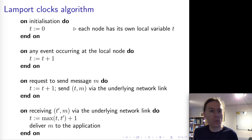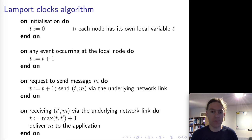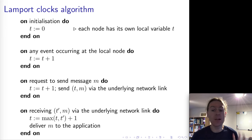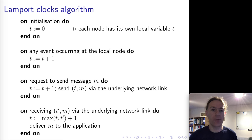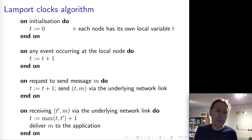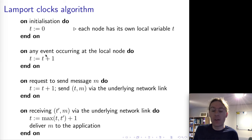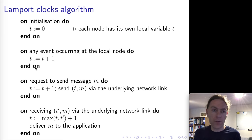Let's start with Lamport clocks. These are named after Leslie Lamport, who published this algorithm in about 1978. This has been a classic of distributed systems. The algorithm starts with every node having a variable t, initialized to zero. Each node has its own copy of t. Every time some event occurs at a node, we increment t. An event could be some local execution step, sending a message, or receiving a message — in all these cases we just increment t.